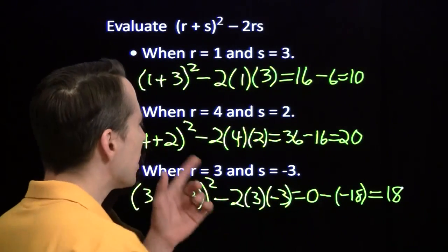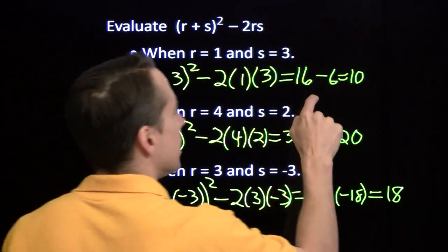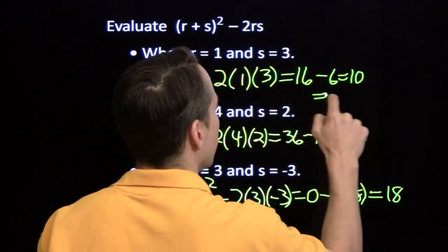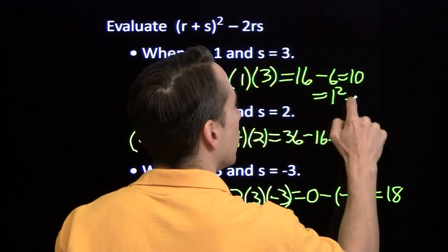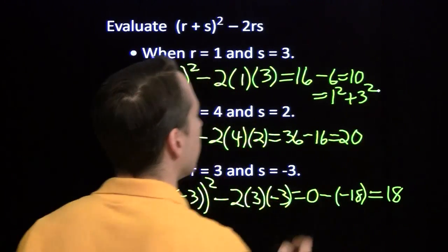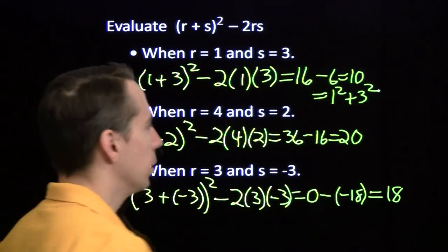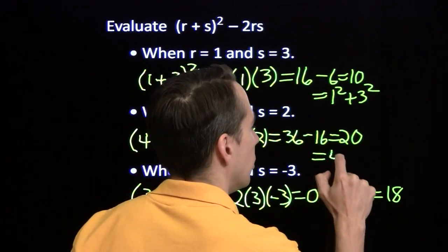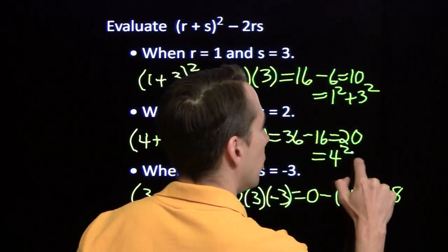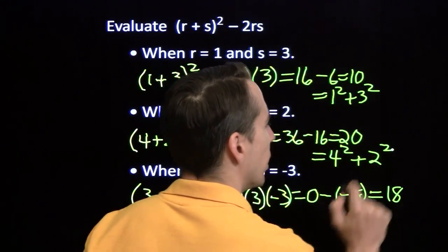Now, wait a second. Check something out here. 10 is 1 squared plus 3 squared. 1 squared plus 3 squared. 20, 4 squared plus 2 squared.